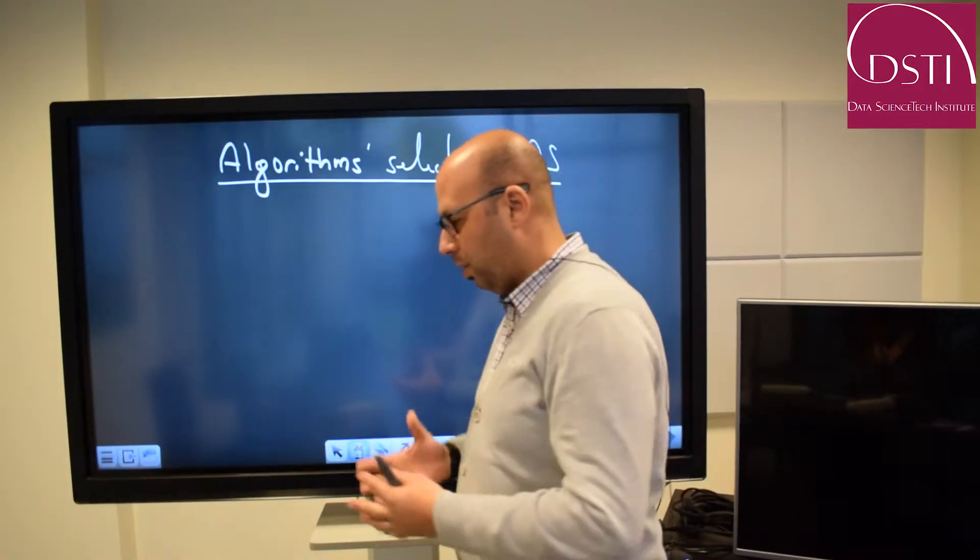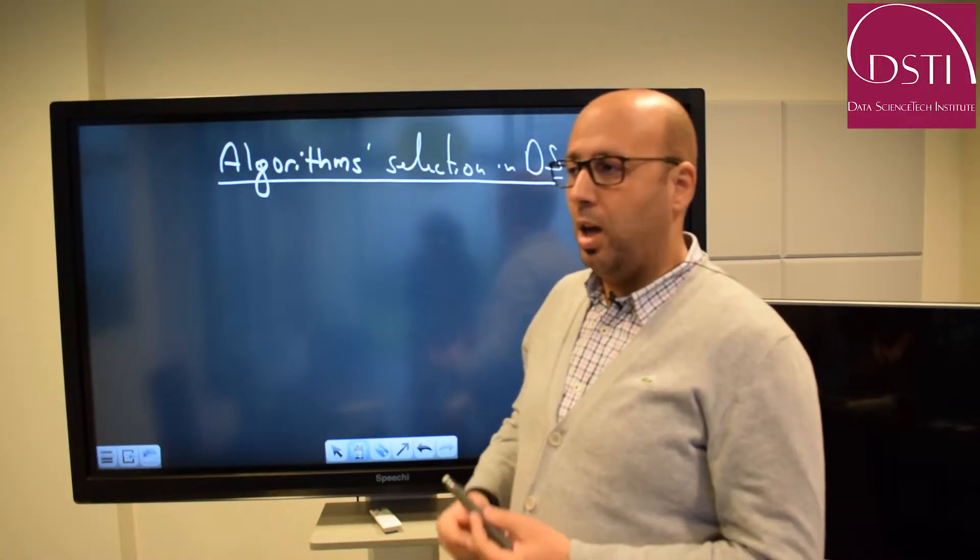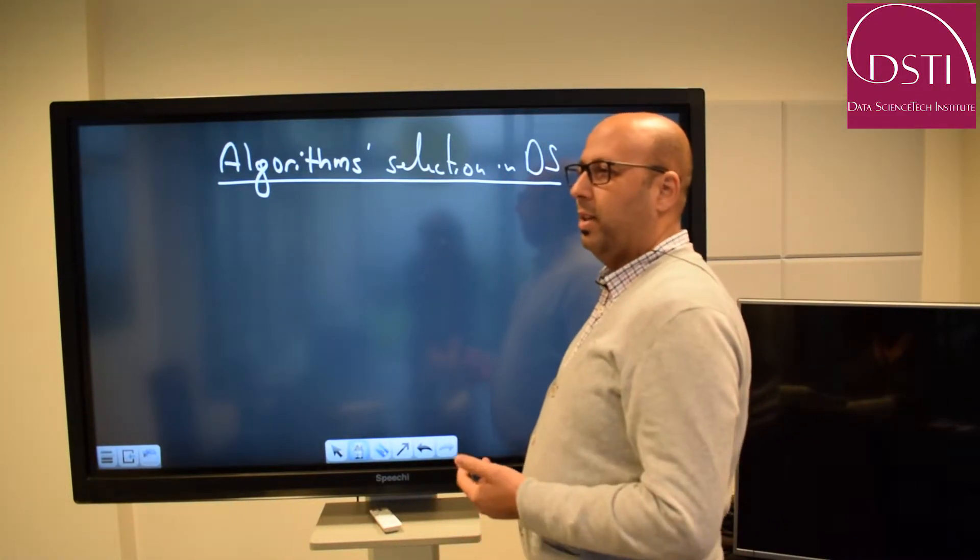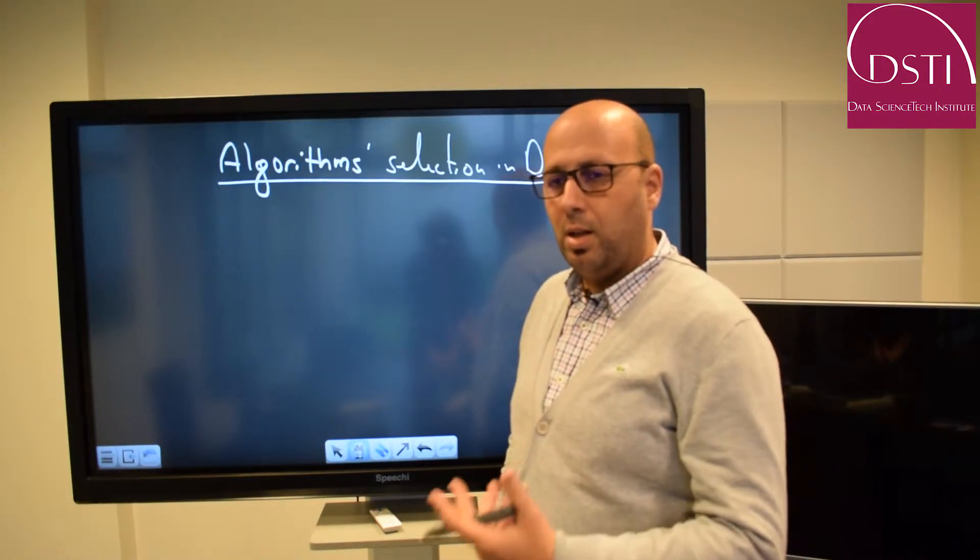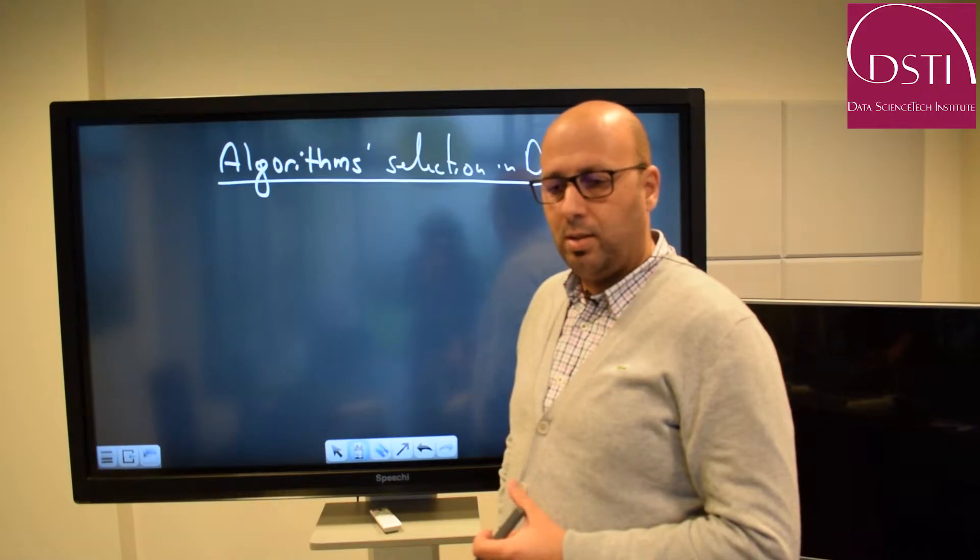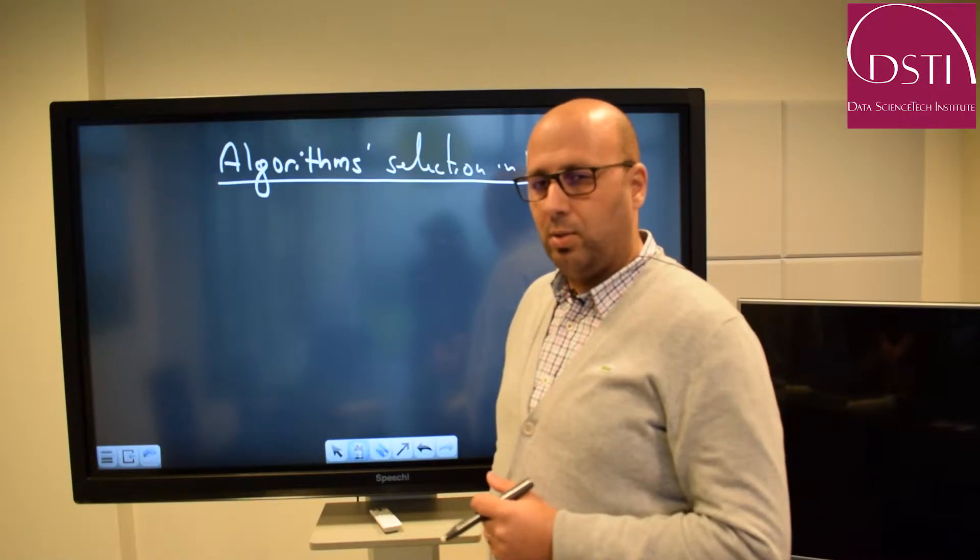It means that in this world we have many algorithms that were developed until now. And if you go ahead to archive, for example, you can see that every day there are many algorithms that are proposed in the literature. So now, how to select one?